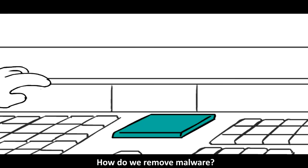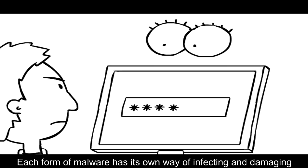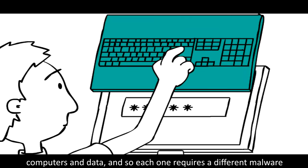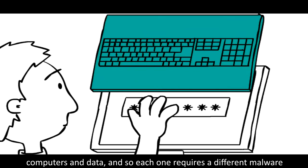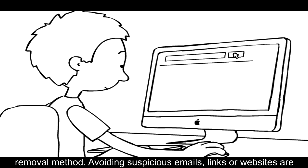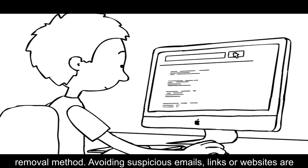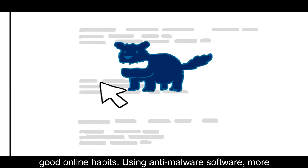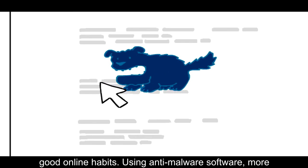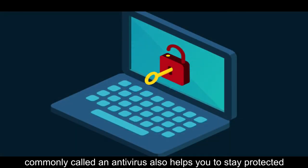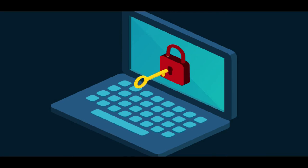How do we remove malware? Each form of malware has its own way of infecting and damaging computers and data, and so each one requires a different malware removal method. Avoiding suspicious emails, links or websites are good online habits. Using anti-malware software, more commonly called an antivirus, also helps you stay protected or remove an infection.